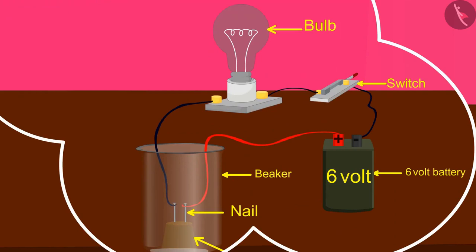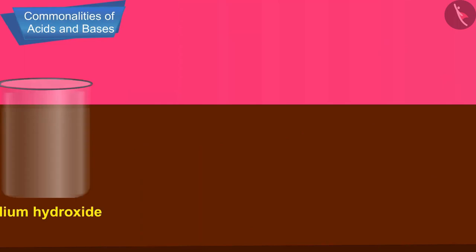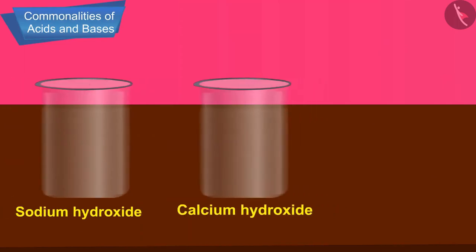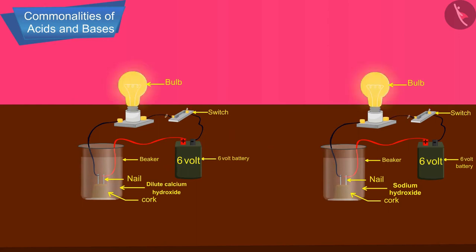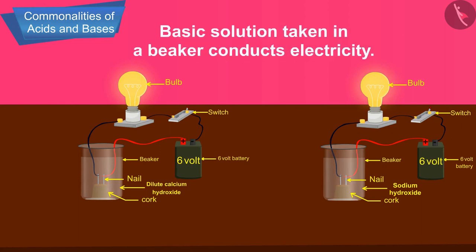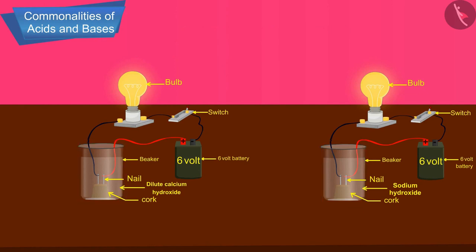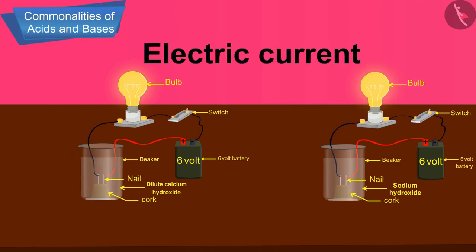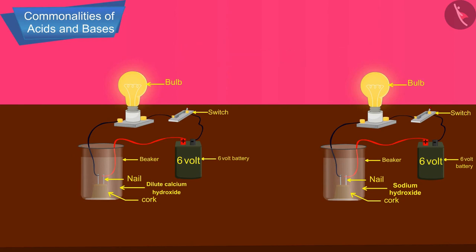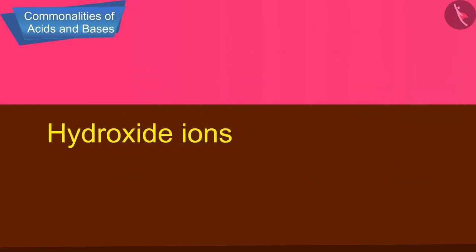We will conduct a similar experiment as we did for acids, but now taking bases like sodium hydroxide or calcium hydroxide. The bulb starts glowing, showing that the basic solution taken in the beaker conducts electricity. The glowing of the bulb indicates a flow of electric current through the solution. The electric current is carried through the basic solution by ions. So we can conclude that when a base is dissolved in water, it always produces hydroxide ions.